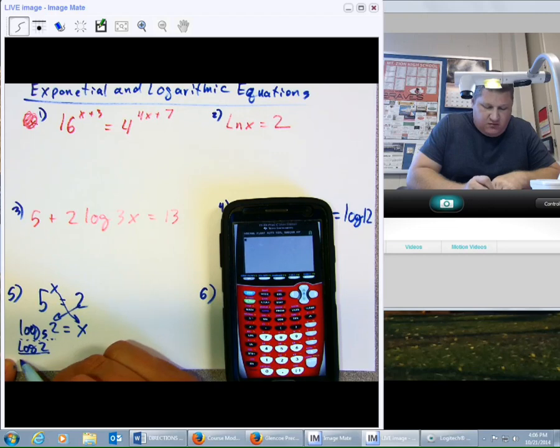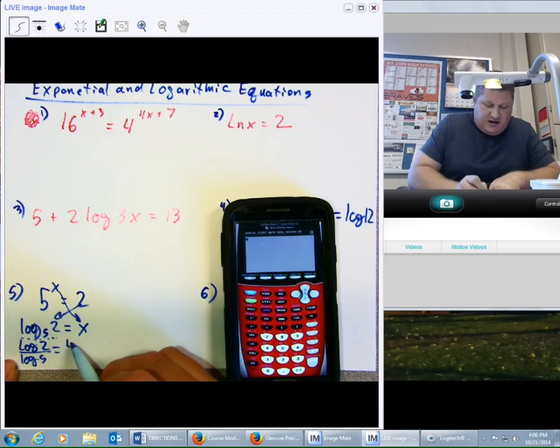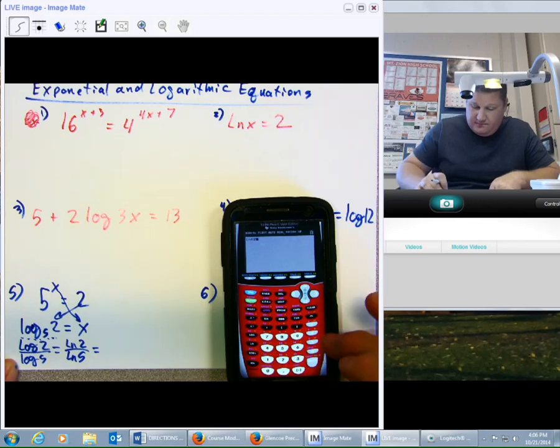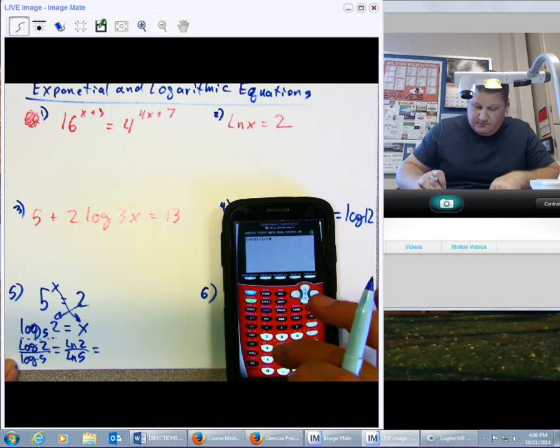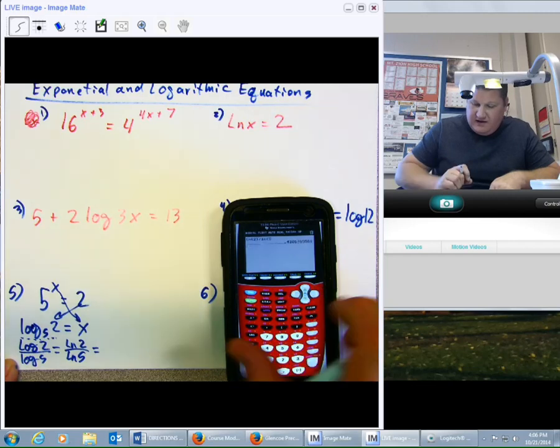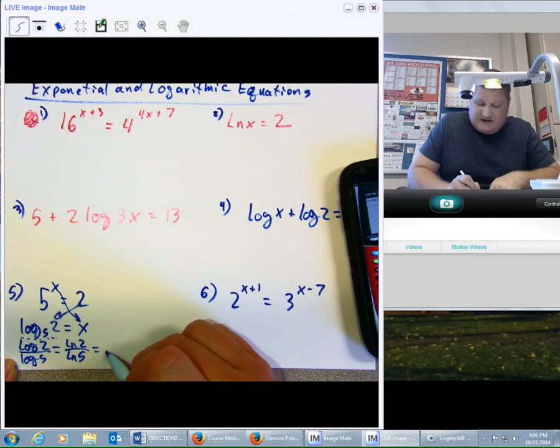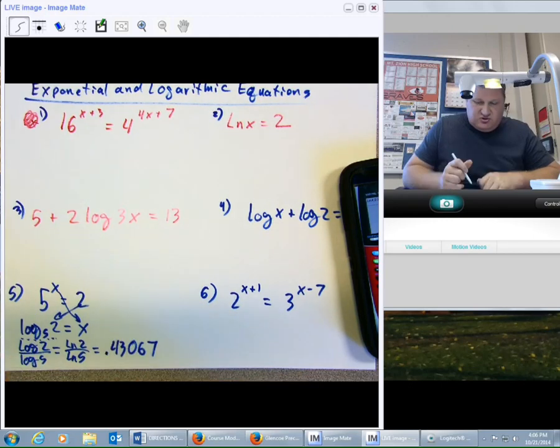So, log of 2 over log of 5. Again, if you so chose, change of base property allows you to say natural log of 2 over natural log of 5. Don't forget your end parenthesis. And the answer is 0.43067. Well, not too shabby. We can do that.